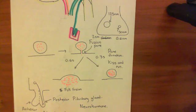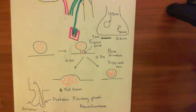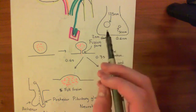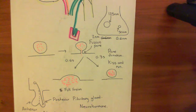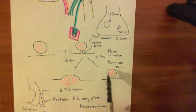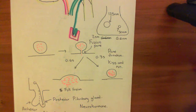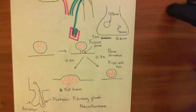So in the posterior pituitary we have two sorts of synaptic vesicles — large (125 nm) and small (50 nm) — which form fusion pores of different sizes: the large vesicle has a fusion pore of around 2 nanometers in diameter, and the small one has a fusion pore of around 0.6 nanometers. The time that the fusion pore is stable — before it either collapses back to the docked state or proceeds to full fusion — also varies between these two types of synaptic vesicle in the posterior pituitary.